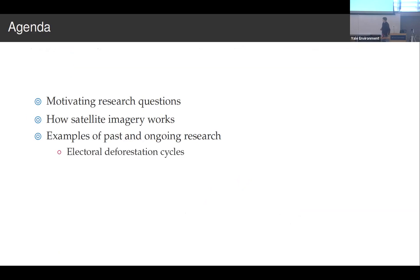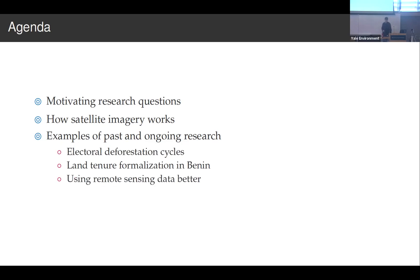The examples are some research about what I call electoral deforestation cycles, which some of you have seen before if you were here two years ago. I'll be talking about land tenure formalization in Benin, and using remote sensing data better than we currently do — which suggests maybe we're not using it quite right in some instances.